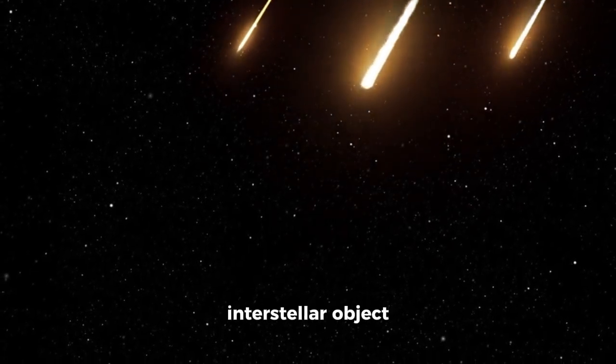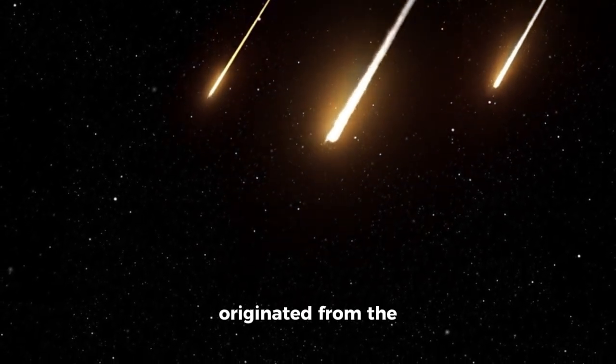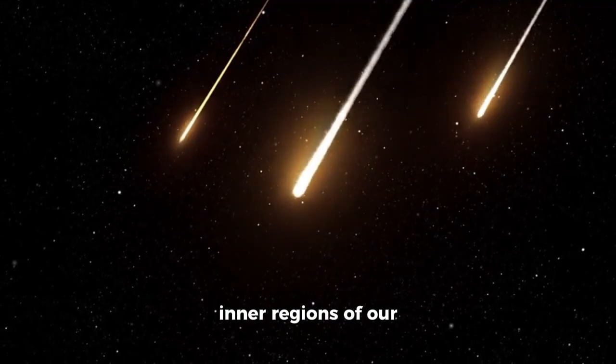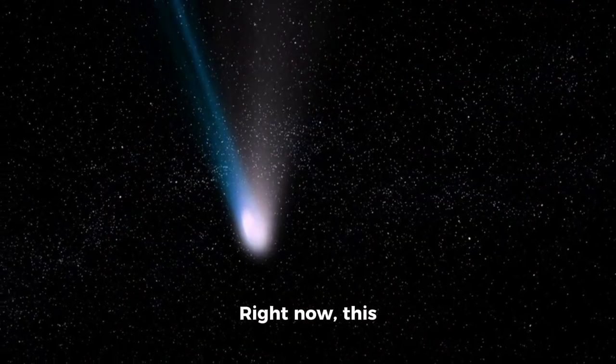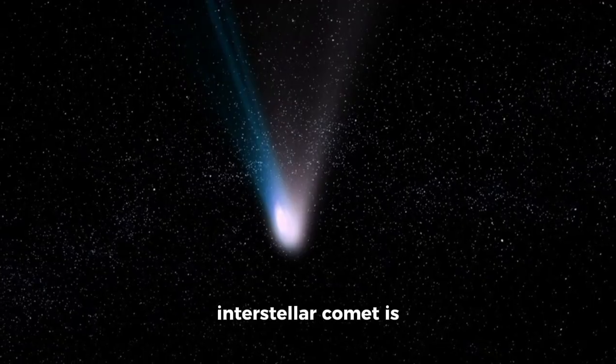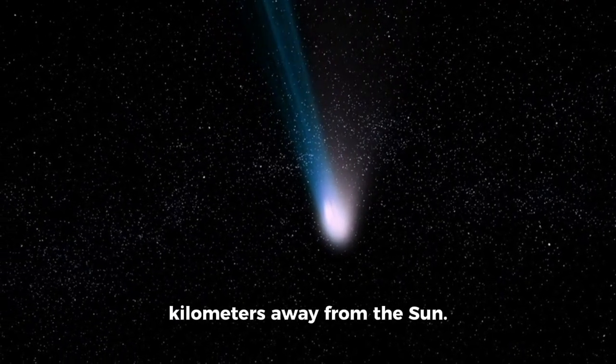The 3-Eye Atlas interstellar object originated from the inner regions of our galaxy and is currently traversing our solar system. Right now, this interstellar comet is about 209 million kilometers away from the Sun.